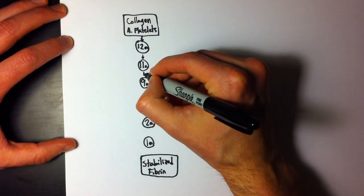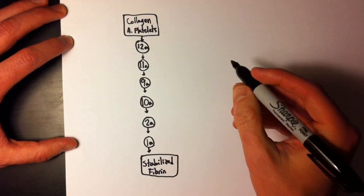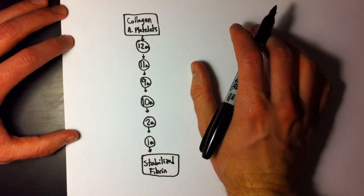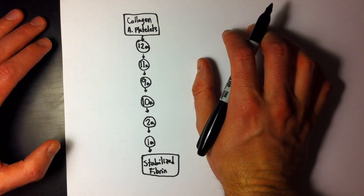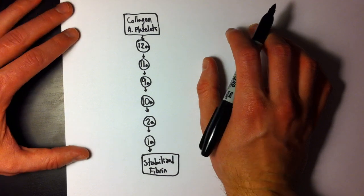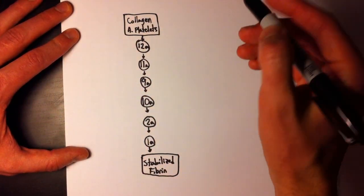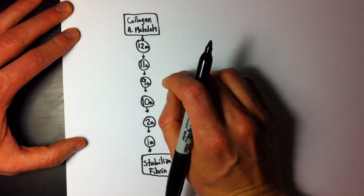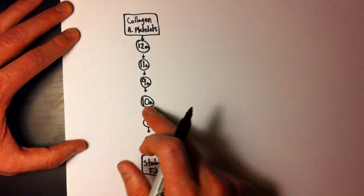First, I'll just add in my little arrows so that we can keep straight where we're going. You know that a couple of these steps require more than just one thing. Often you require two factors. So what I do is I just add in those buddy factors, that's how I think about them, just here on the right side. So 8A is the factor that helps 9A to convert 10 to 10A.